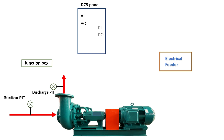We also have an electrical feeder which controls the motor through control supply signals from instrumentation. Basically, from the pump the analog input signals — that is suction and discharge pressure transmitters — go into the junction box. From the junction box, a multi-core cable runs to the ICS rack room and gets into the analog input module.